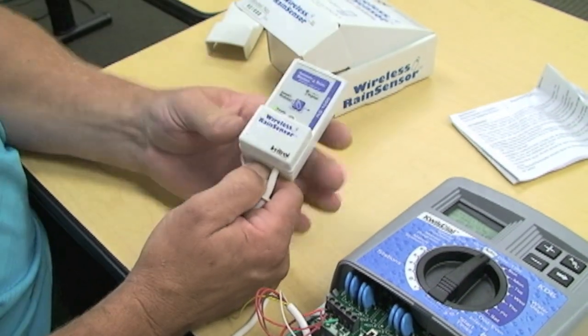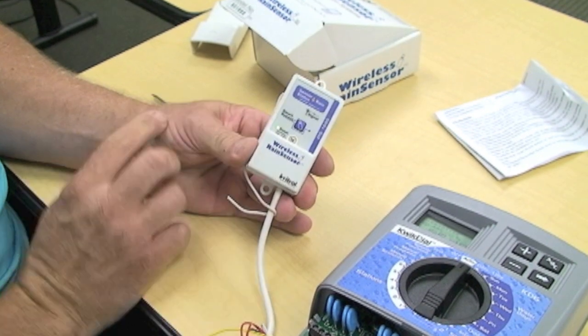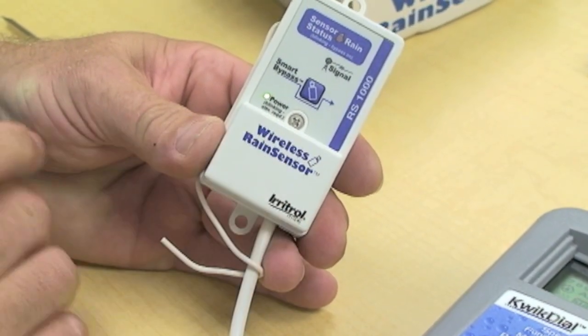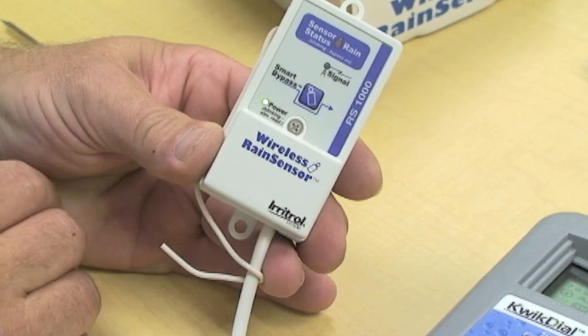Once you remove the cover from the receiver, we can see that we have a power light on. So we've successfully installed the rain sensor to the controller.